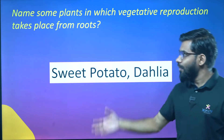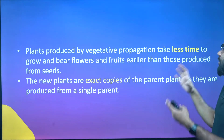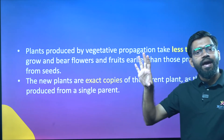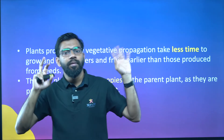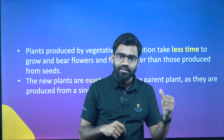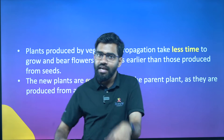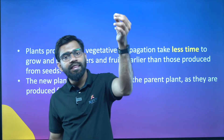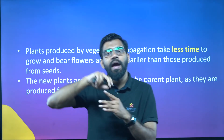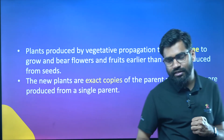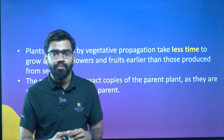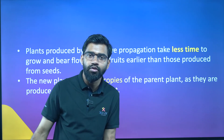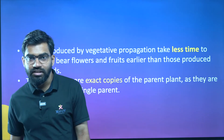Vegetative propagation from the roots is one example. In asexual reproduction, there are the exact copies — the characteristics in asexual reproduction are exact copies of the parent. There are seeds in sexual reproduction but not in asexual reproduction.